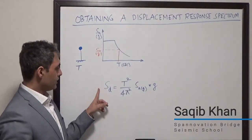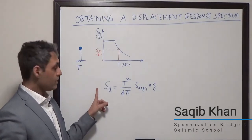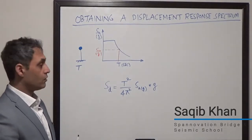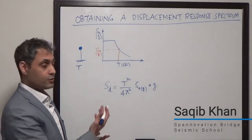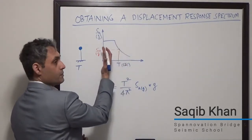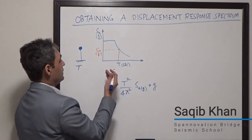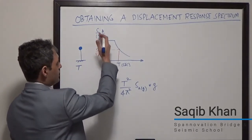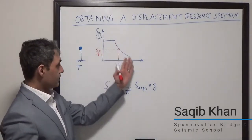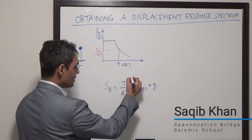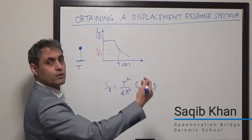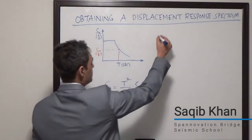When we examine this formula a little more closely, we find that as the period increases, the spectral displacement goes up. This is in contrast to the acceleration spectrum, where usually with smaller periods — more stiffness, higher frequencies — the acceleration values are high, and then as you become more flexible, the acceleration drops. In this formula, T squared is clearly in the numerator, so as T goes up, the spectral displacement value goes up.